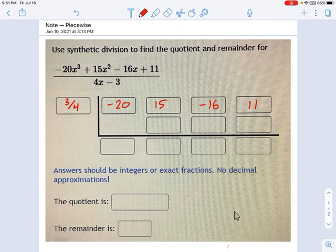It's more complicated because you have a fraction there, but other than that, all the rules work the same. So negative 20 comes down, times 3 quarters makes negative 15. Add these up, you get 0, times 3 quarters is 0. Add these up, you get negative 16,